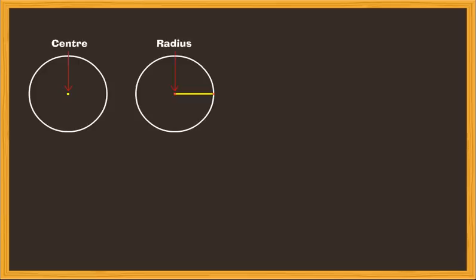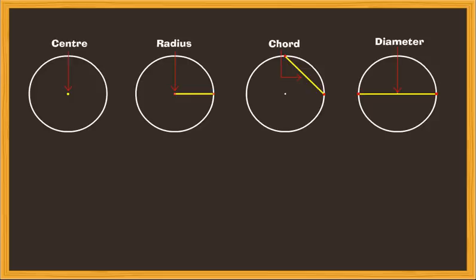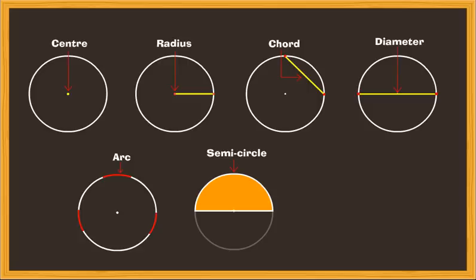Let us do a quick recap: center, radius, chord, diameter, arc, semicircle, circumference.